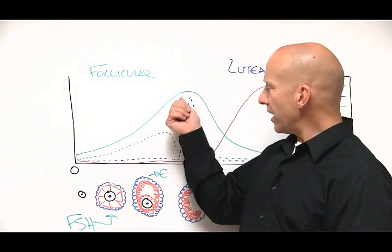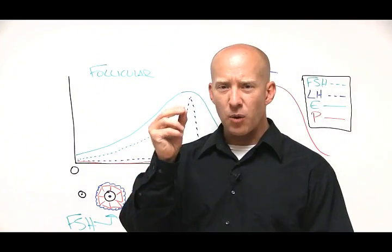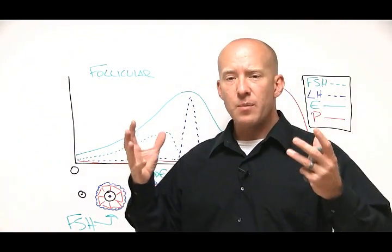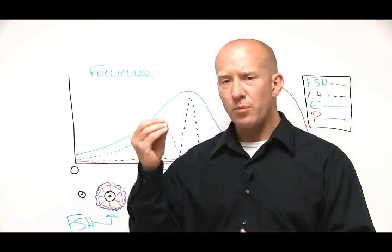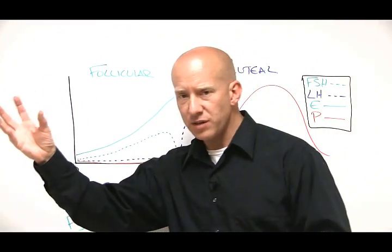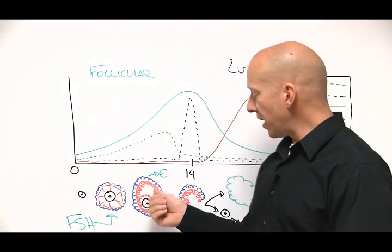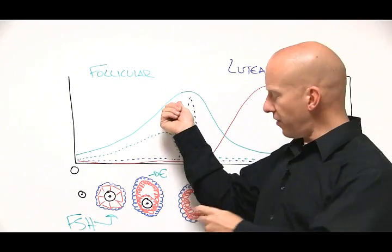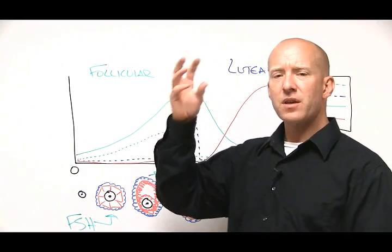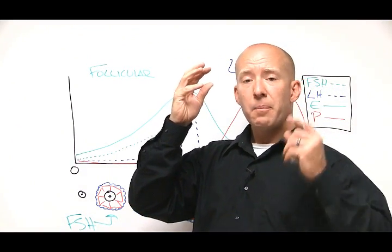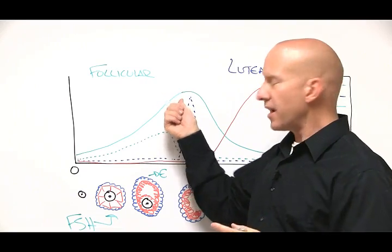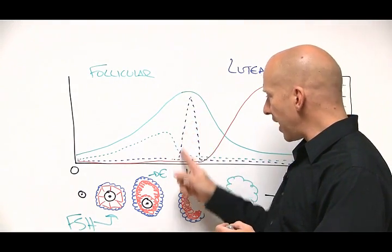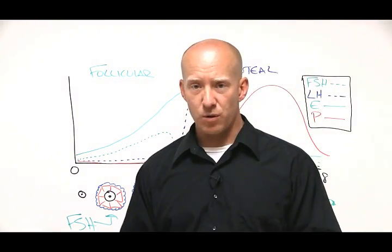Now, when estrogen reaches its highest amount, what that's doing is the follicle is telling the body, I am as mature as I'm going to be. I am ready to be ovulated and released from the ovary into the fallopian tube. So then what happens is this peak of estrogen, suggesting that the follicle is completely mature, the pituitary gland in the brain picks up this level of estrogen and releases in a surge form this dashed blue line, which is luteinizing hormone.